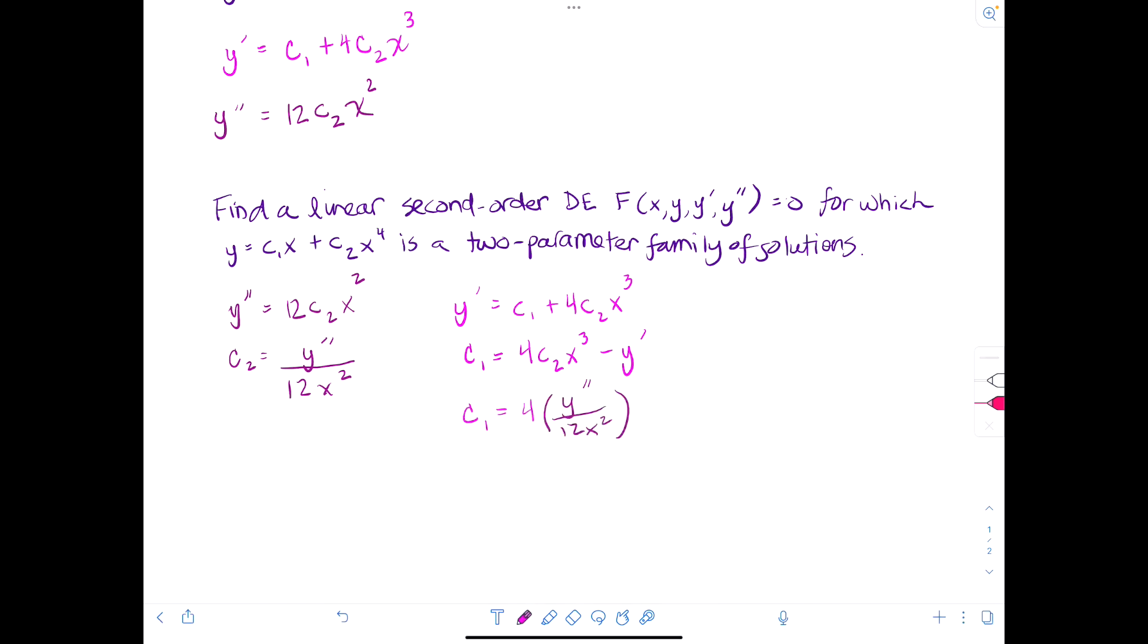That is going to be multiplied by x cubed and then minus y prime. So simplifying c1 is 4 x y double prime over 12. So that'll be x y double prime over 3 minus y prime.